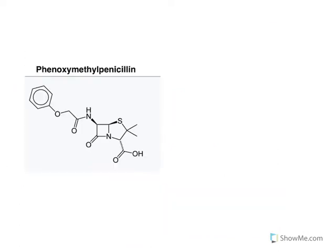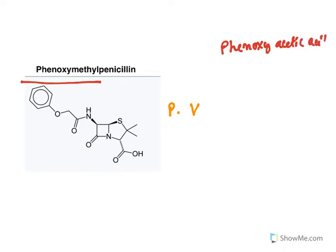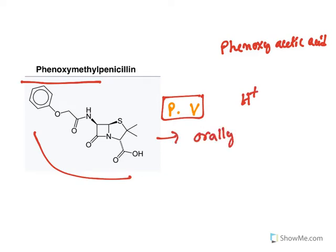There is one more natural penicillin called phenoxymethyl penicillin or Penicillin V. When the fermentation medium is fed with phenoxyacetic acid, it results in the formation of phenoxypenicillin — Penicillin V. An advantage of phenoxypenicillin is that it is acid resistant and can be taken orally. The oxygen in the side chain increases ring stability, which results in acid resistance.